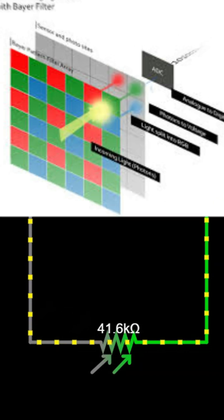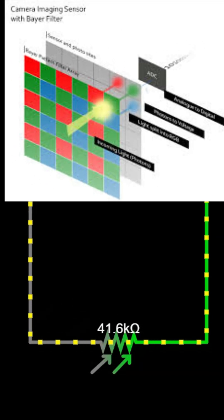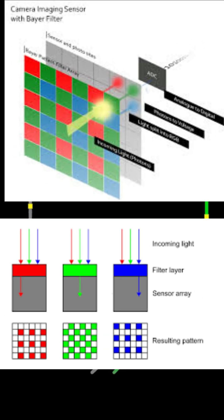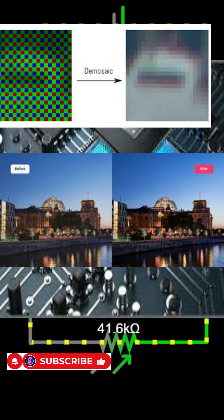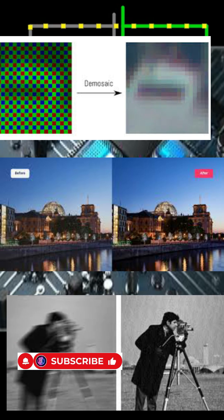Inside the sensor, the Bayer filter splits the incoming light into red, green, and blue components. Then a tiny processor does demosaicing, noise reduction, and image enhancement within milliseconds.